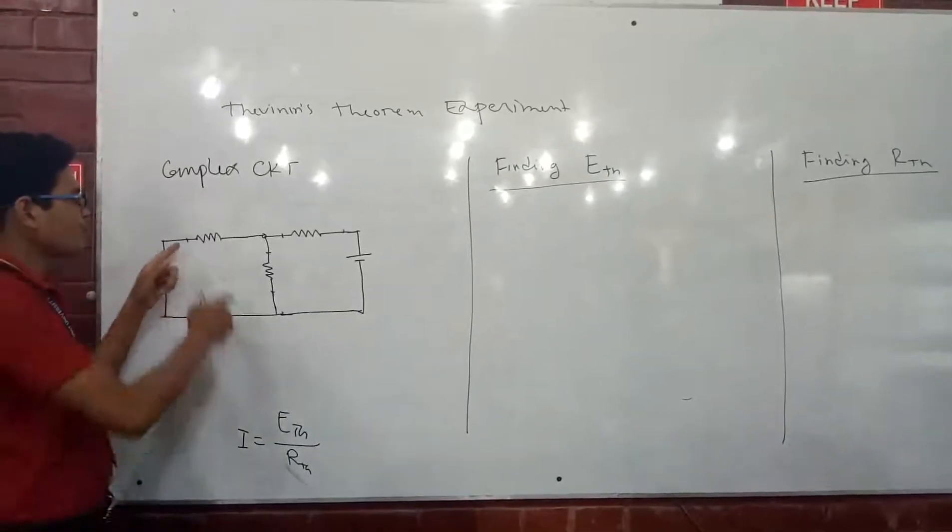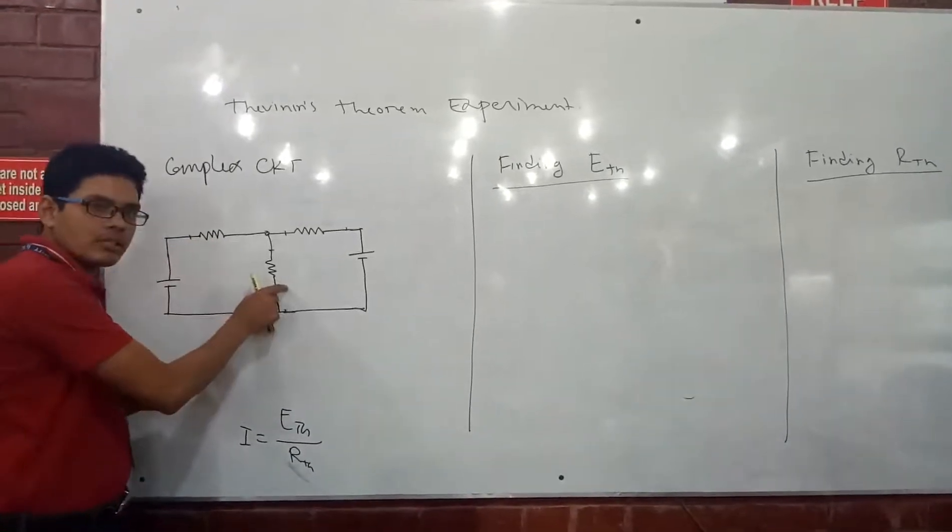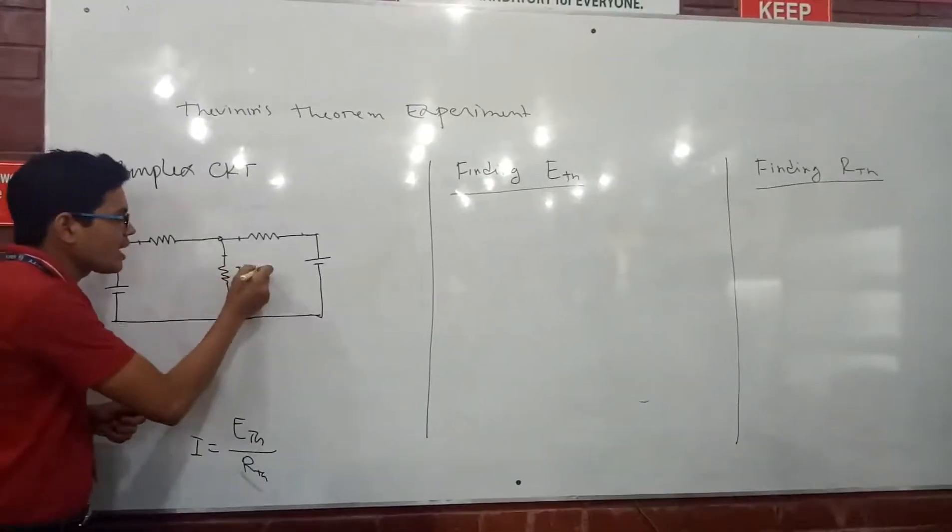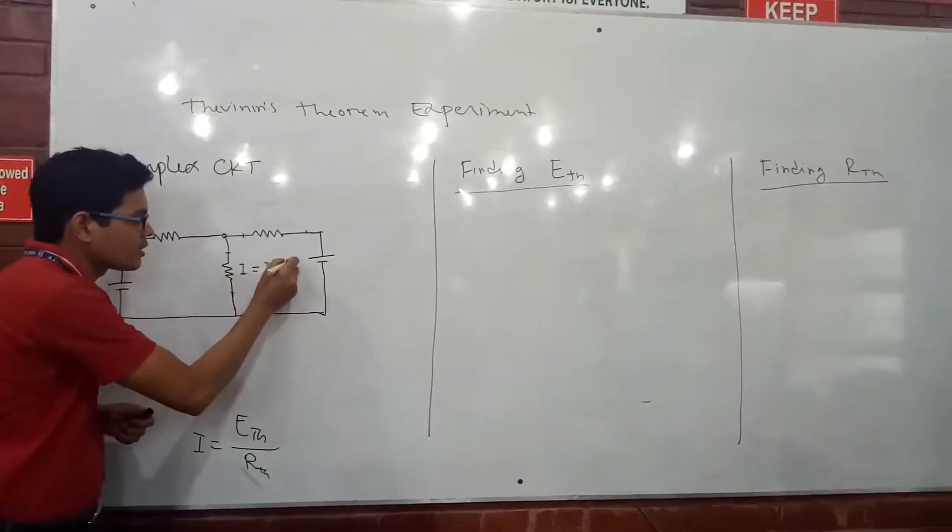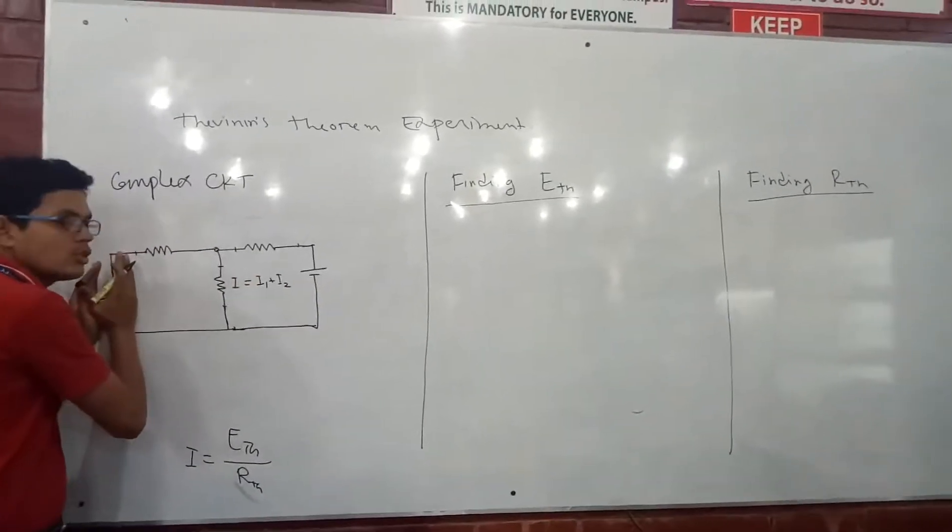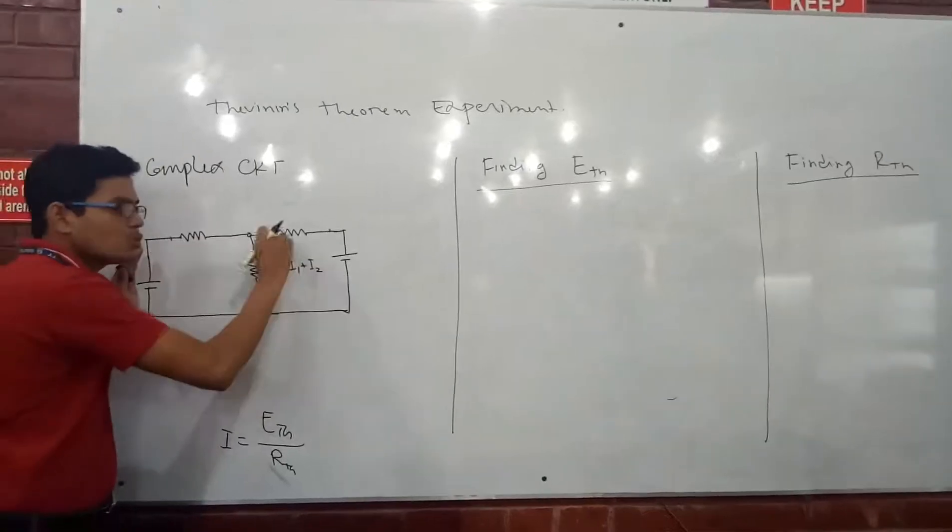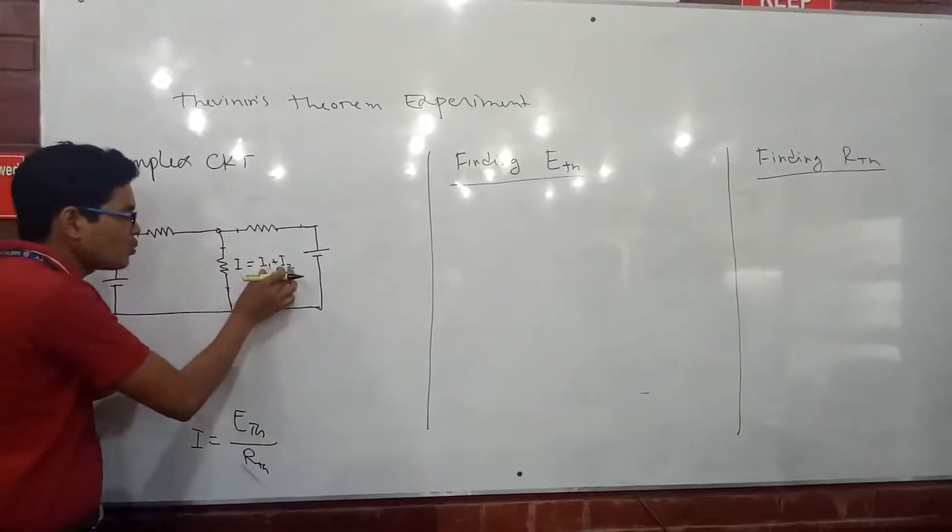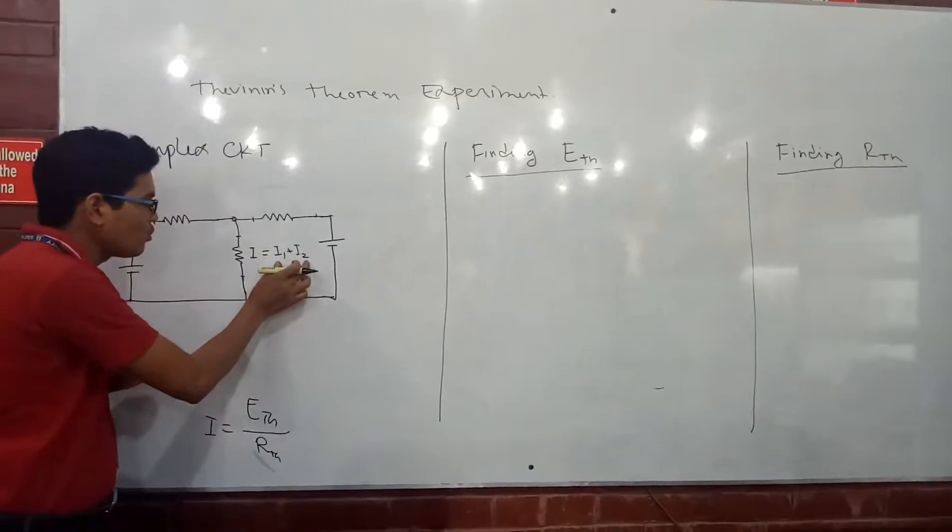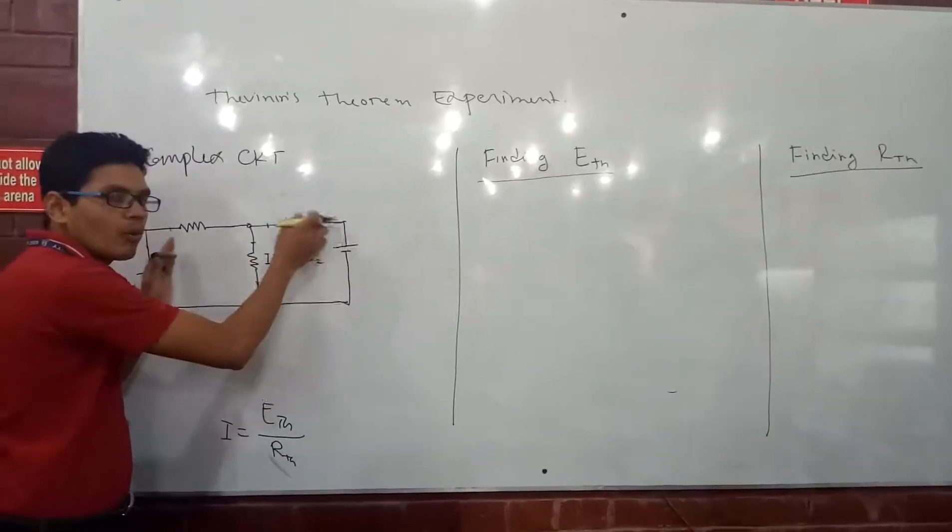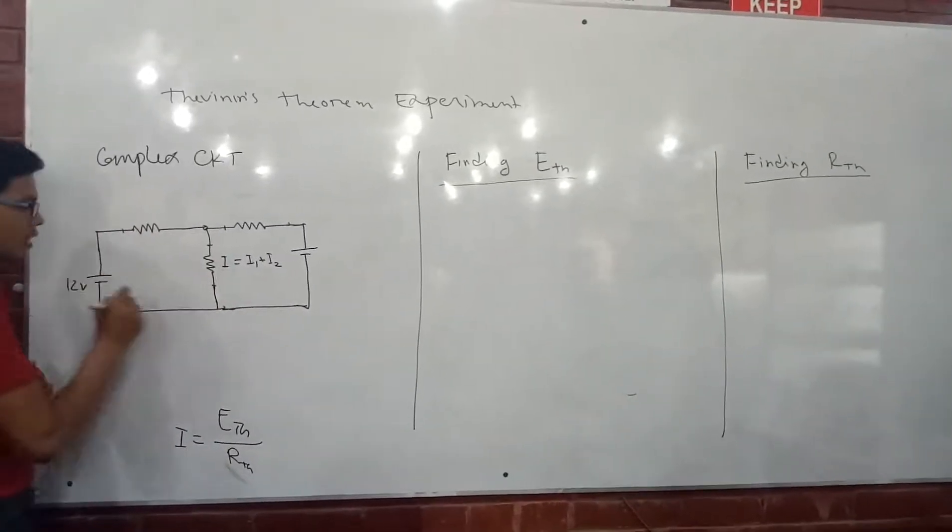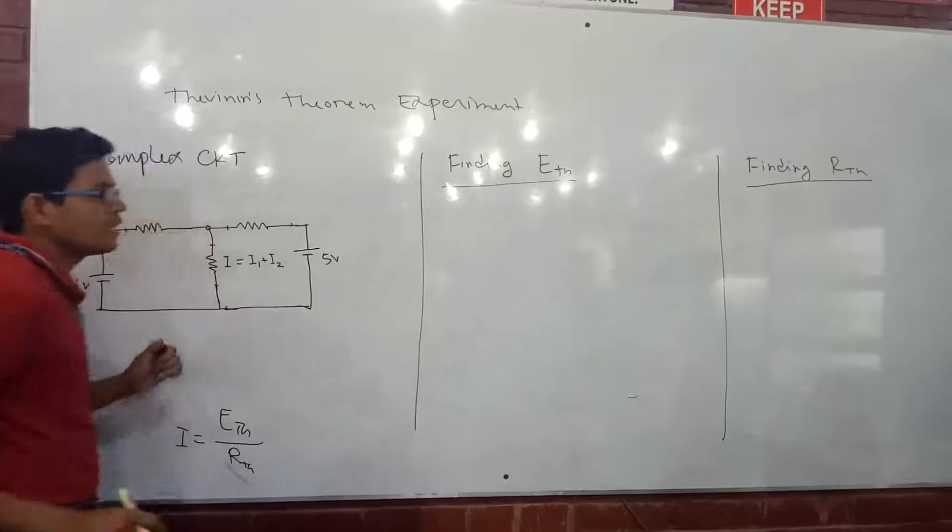That means when this source is absent, current is due to this source, and when this source is absent, current is due to this source. Sum of these two individual source currents is equal to when both sources are working together. You understand? So we had a 10V source and another 5V source, that was superposition theory.